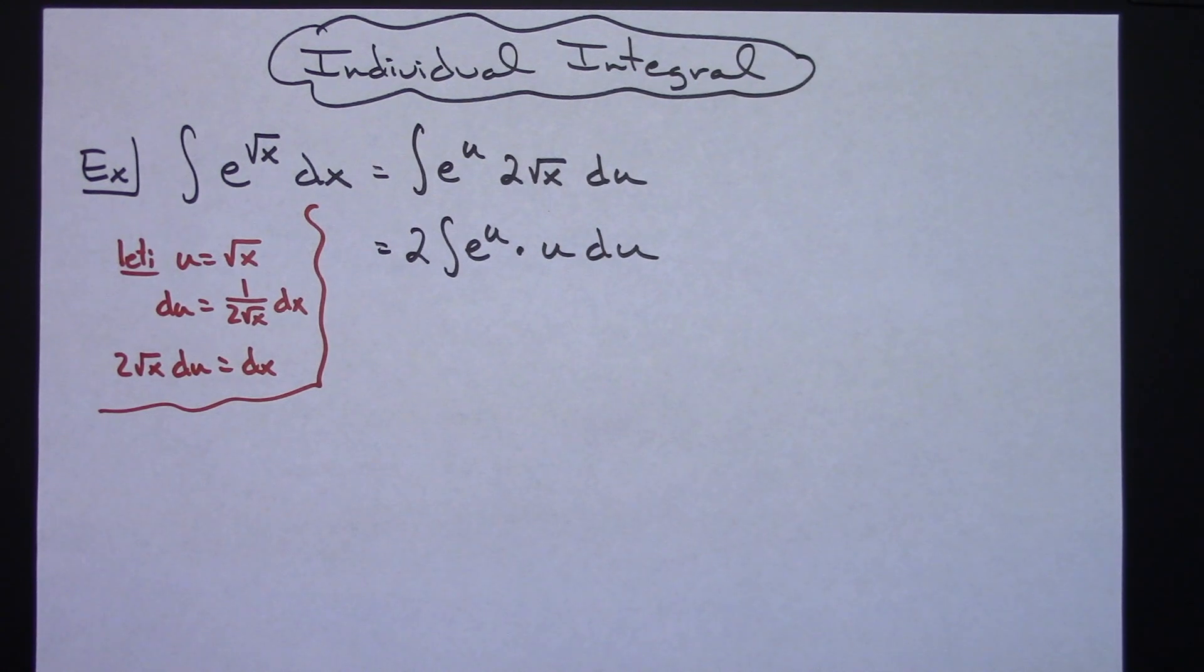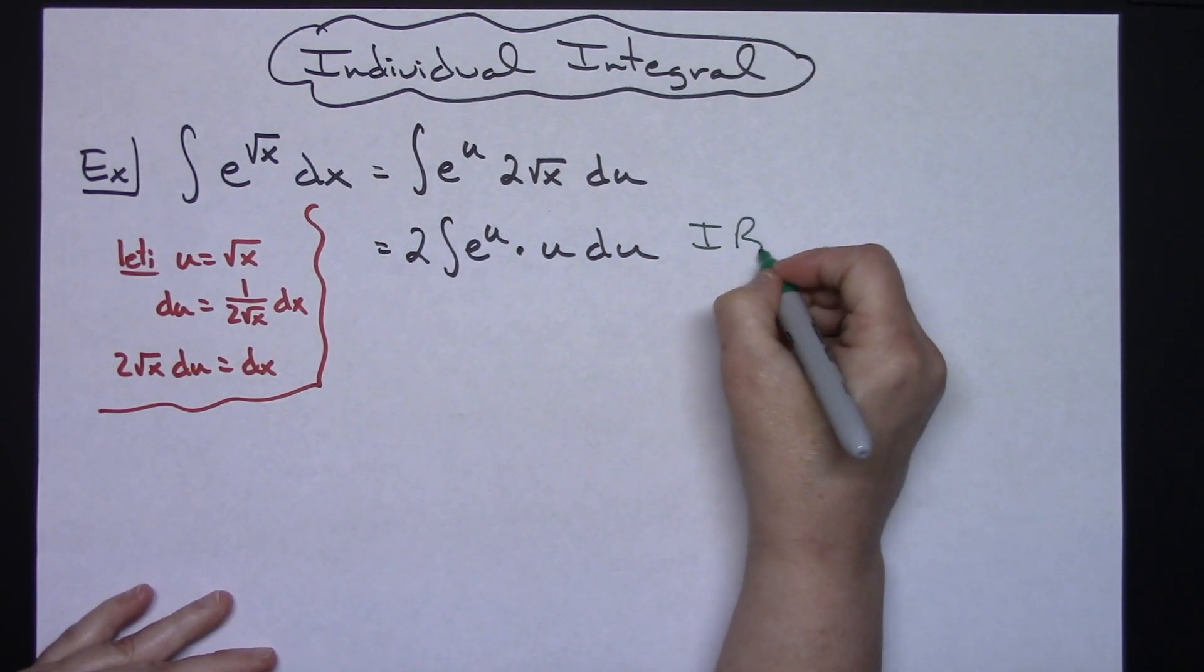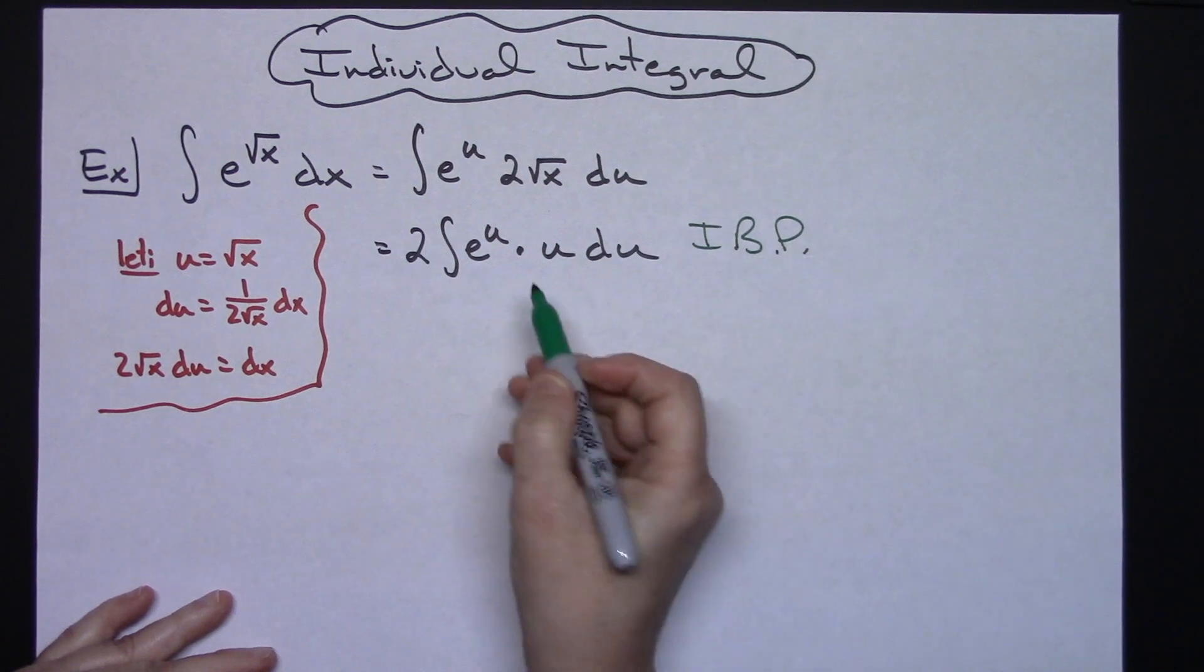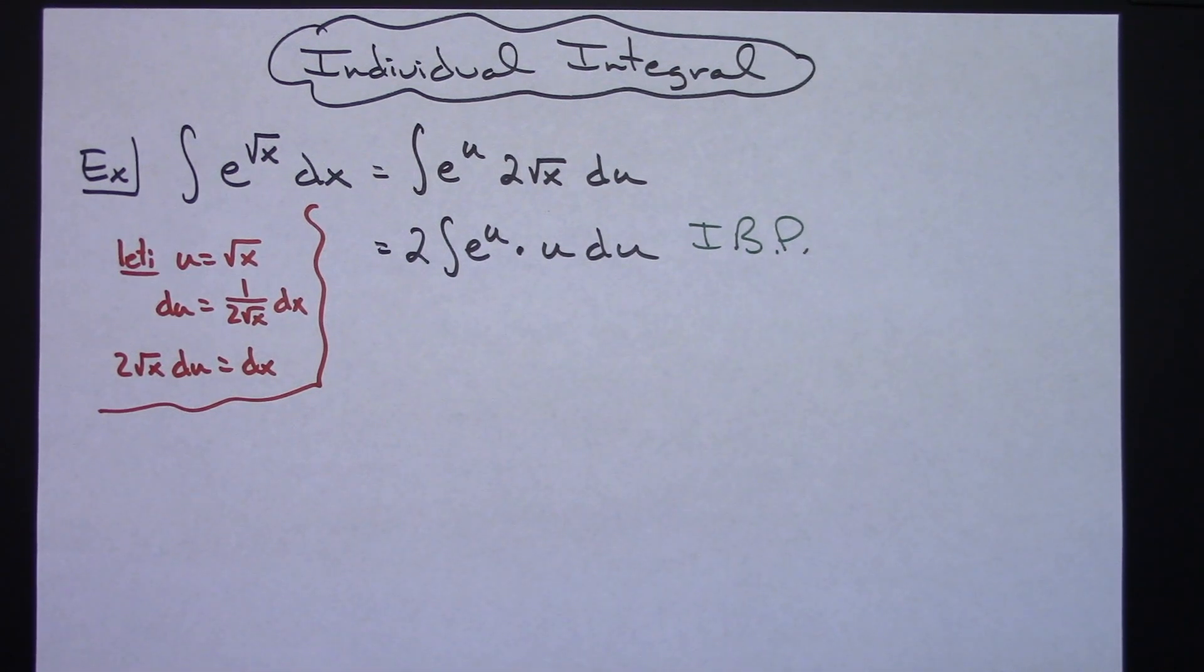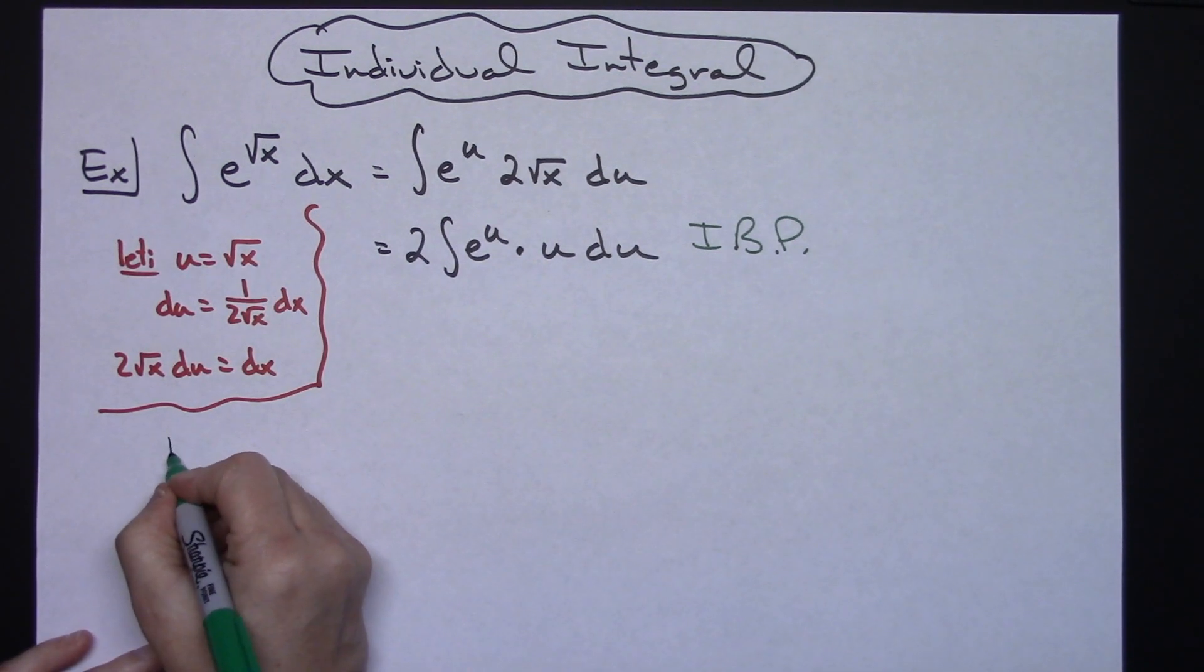Now at this point it is where we want to do our integration by parts. And I am going to do a shortcut method, shortcut being the DI method. So we're going to make two columns, a derivative column and an integral column, and do that integration by parts.